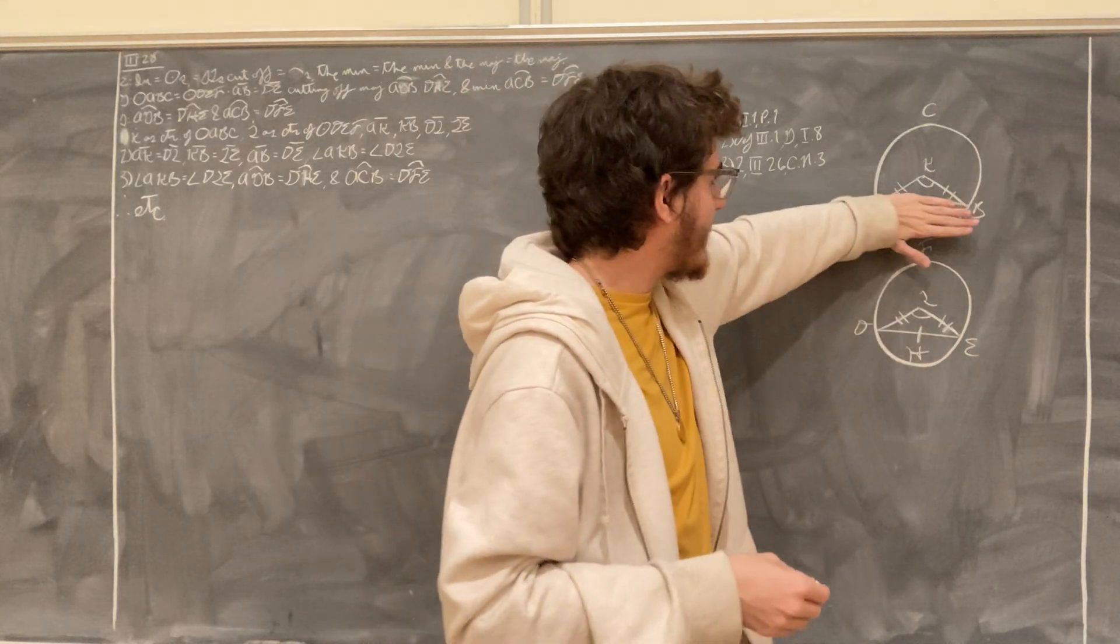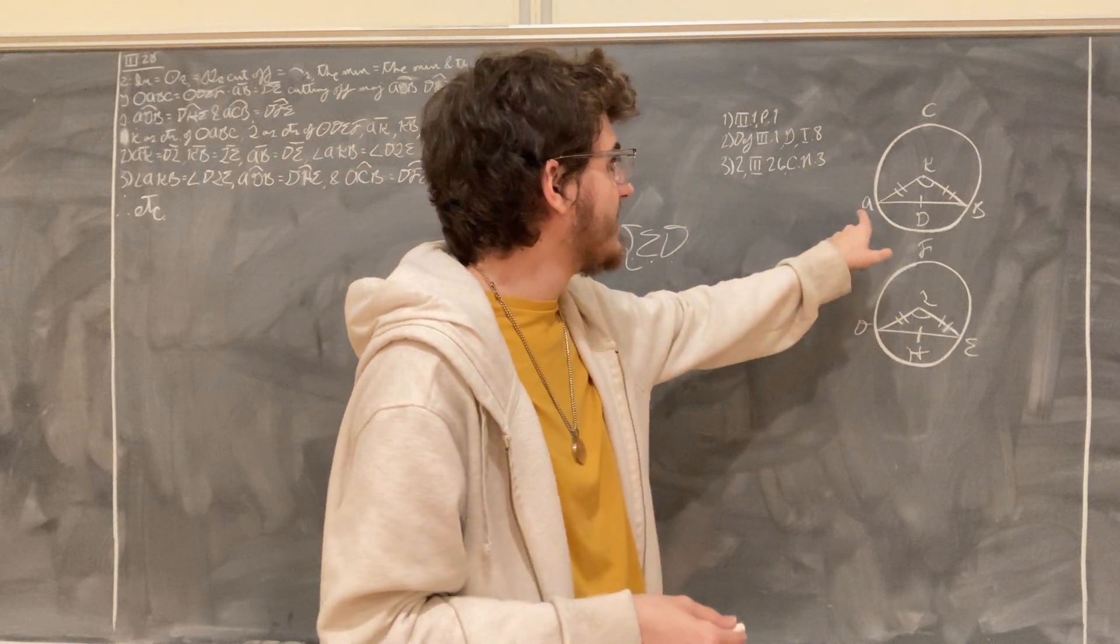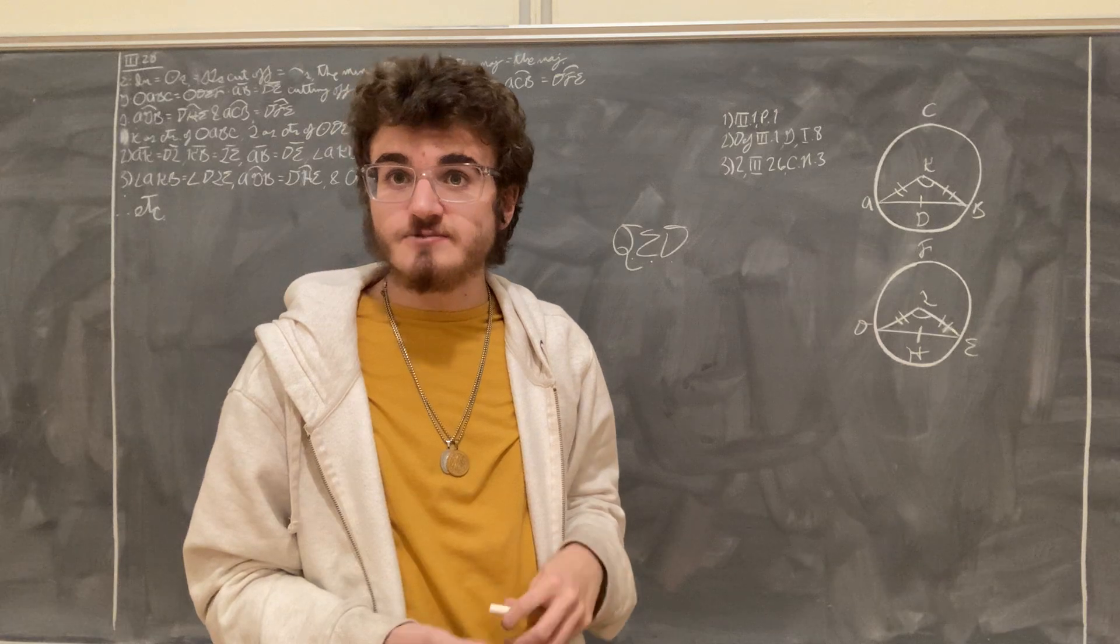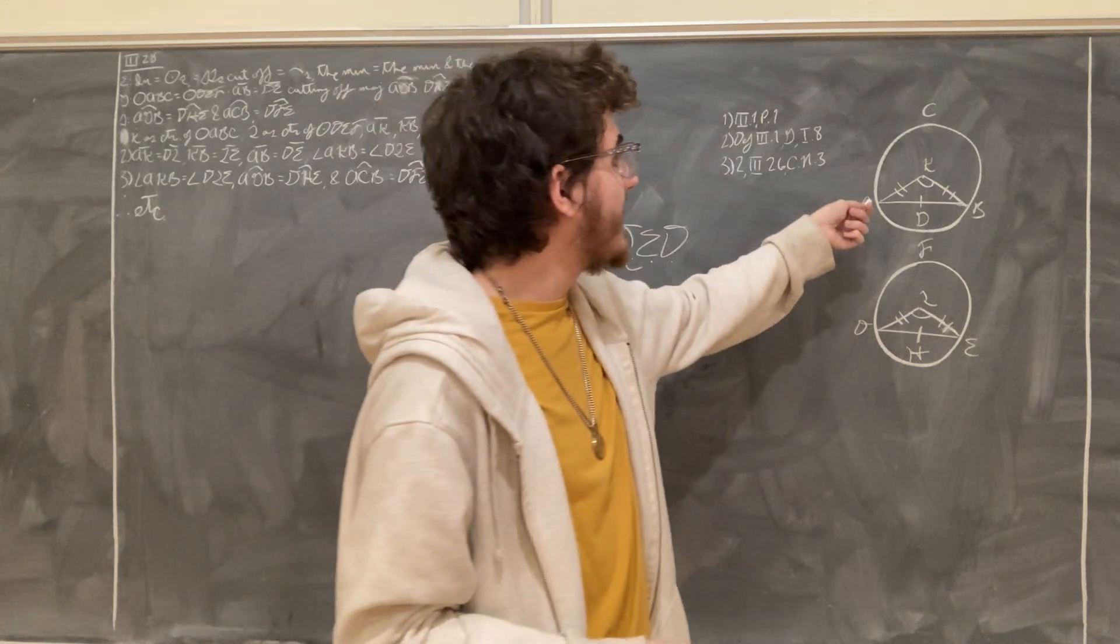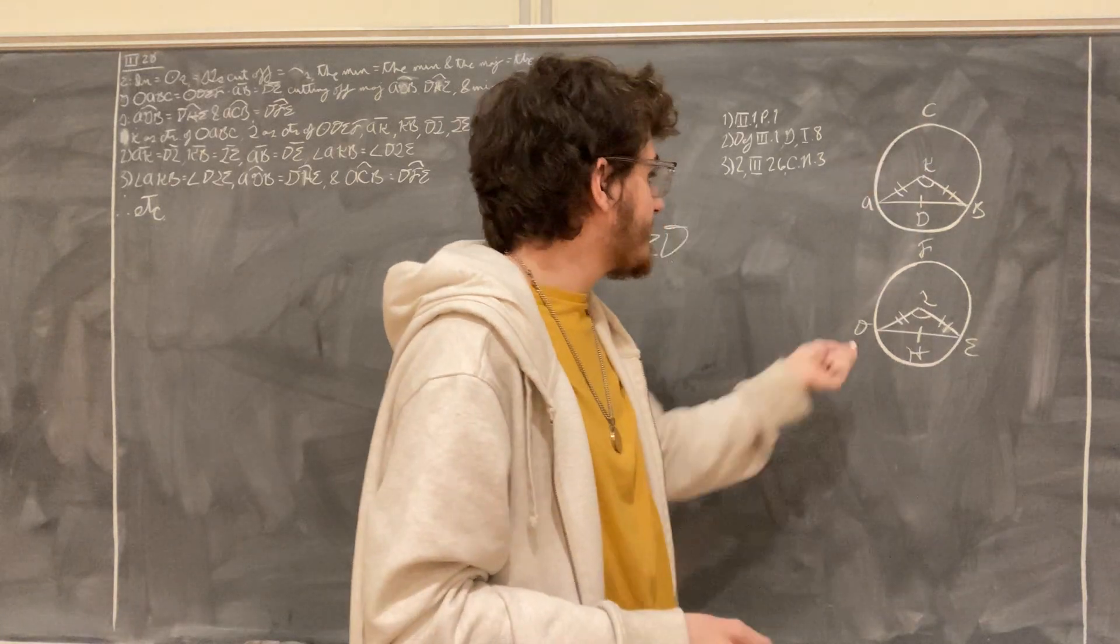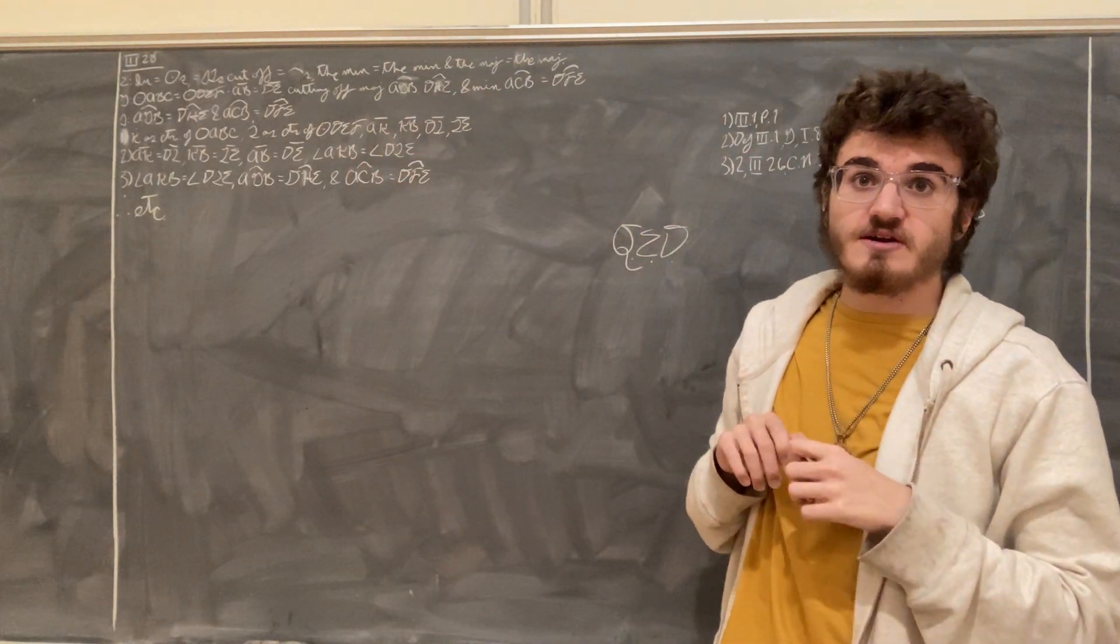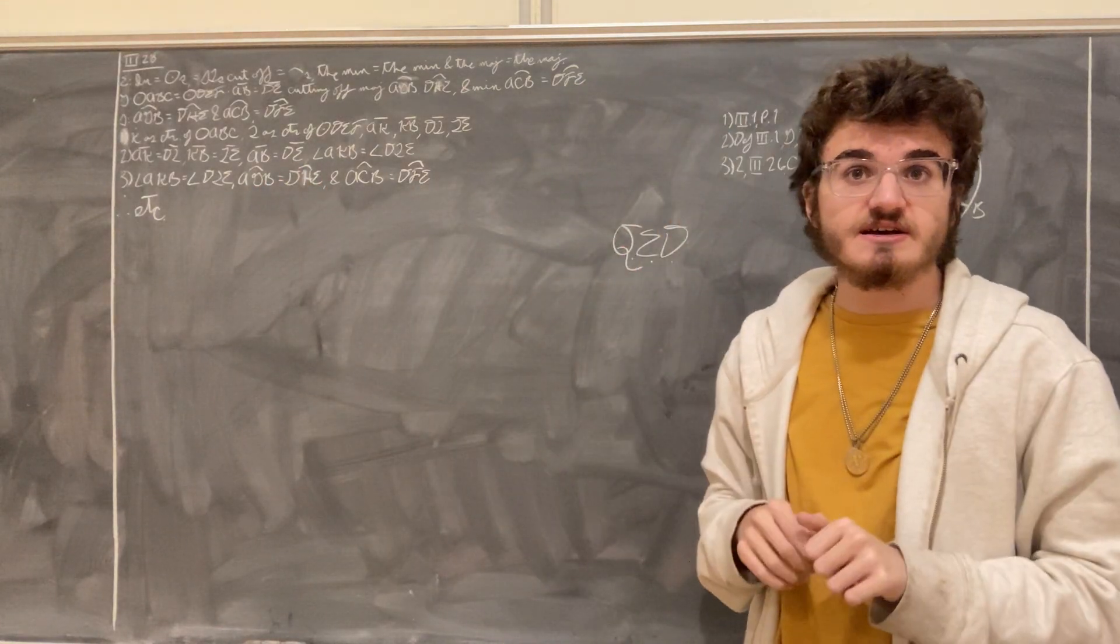And so if we subtract that segment and that segment, what we are left with is the arc ACB and the arc DFE, and equals having been subtracted from equals, we know that these remainders must be equal, so that we can say that the arc ACB is equal to the arc DFE. This being what we set out to prove, we are then done with the proposition, therefore QED.